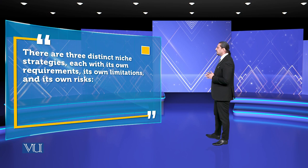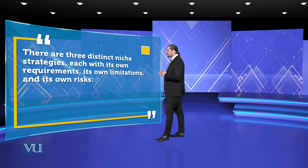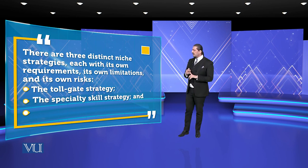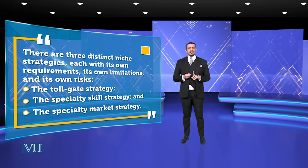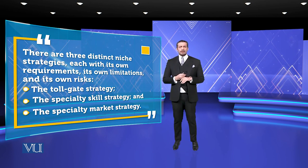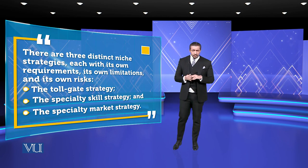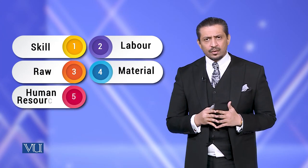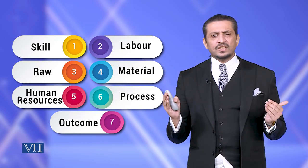There are three distinct niche strategies, each with its own requirements, its own limitations, and its own risks. The first is the toll gate strategy, the second is the specialty skill strategy, and the third is the specialty market strategy. These three strategies limit the ecological niche system. The specialty skill strategy gives you the process — skill kitna hoga, labor kitna hoga, raw material kitna hoga, human resources kitna hoga, process kitna hoga, outcome kya hoga.